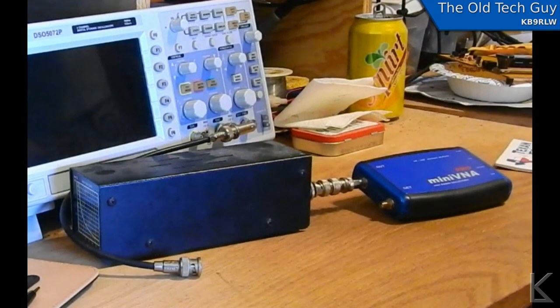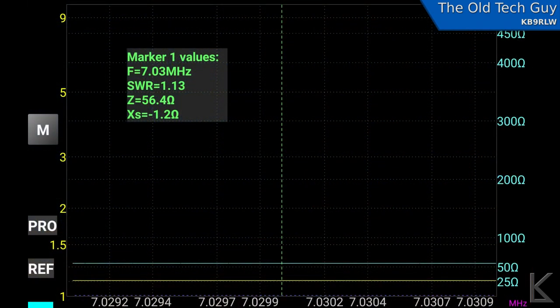So when I scanned the dummy load, this is what I found at 7.03 megahertz, an SWR of 1.13 to 1 and a Z, an impedance of 56.4 ohms. So now I know that my dummy load is precisely 56.4 ohms at frequency, and I have my R value.